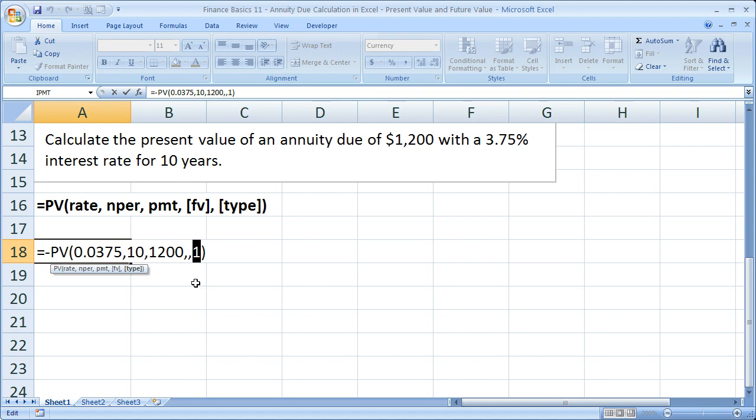Also remember, the type argument is at the end. So you're going to have to put something or leave it blank for the future value or present value argument right here. These arguments have little brackets around them, meaning they are optional.